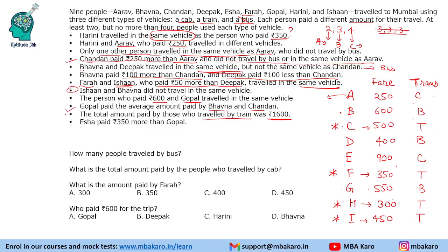So we are done with the amounts. Three people travelled by bus. The total amount paid by those who travelled by cab — Arav and Isha — is 1150 rupees. Farah paid 350 rupees, and Bhavana paid 600 rupees for the travel. This was the solution to the set and the answers to the questions.